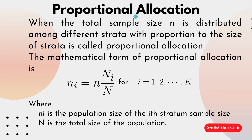Proportional allocation: as its name suggests, the procedure depends on proportion. The total sample size n is distributed among different strata in proportion to the size of each stratum. If one group is large in numbers, there is a greater probability of selecting more sample size from that group.